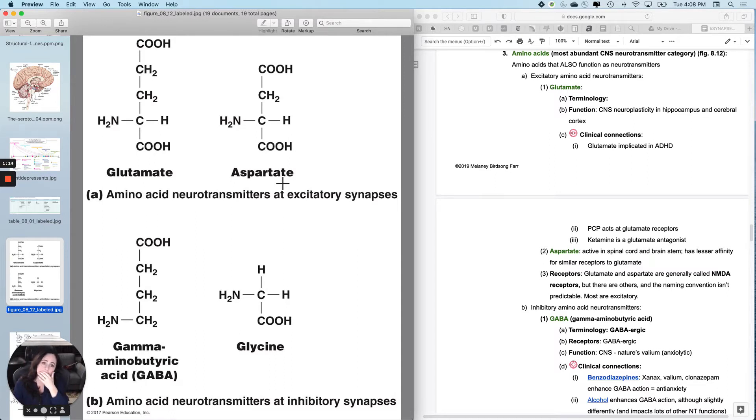The function for glutamate is it's really important in neuroplasticity in a portion of the brain called the hippocampus, which is important for memory. It's also important for neuroplasticity in the cerebral cortex.